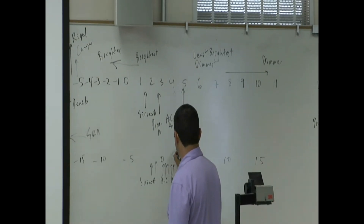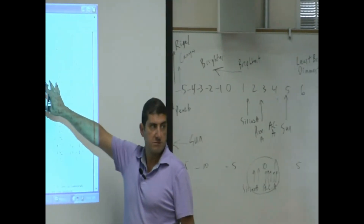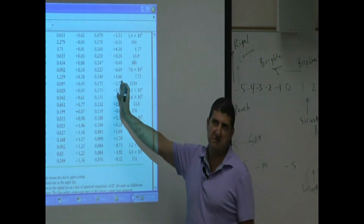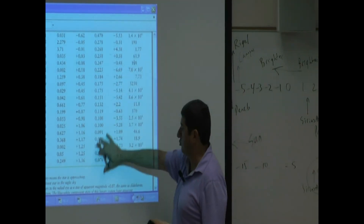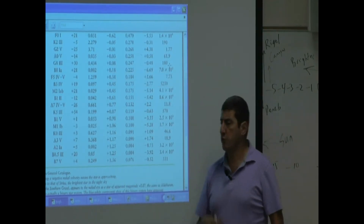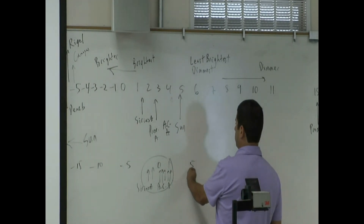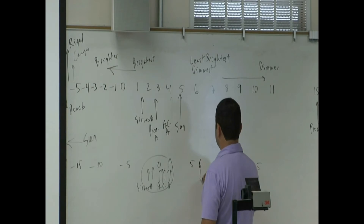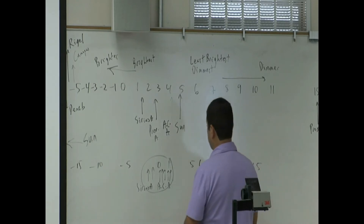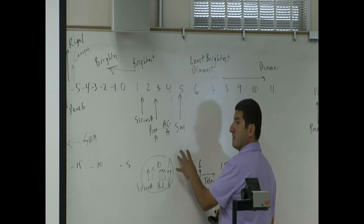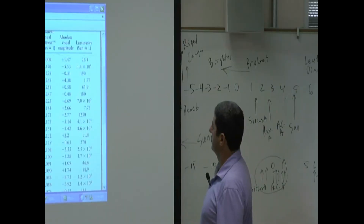Stars around positive 1.36 on the apparent scale — you don't need a telescope to see them. From LA you might not be able to see them due to city lights, but if you go to the desert you can easily see any star up to about positive 1. As you go toward positive 6, it becomes harder and harder to see. Anything beyond positive 6 requires a telescope. In the desert you can see a 3 or 4 easily, but a positive 6 will be tough.